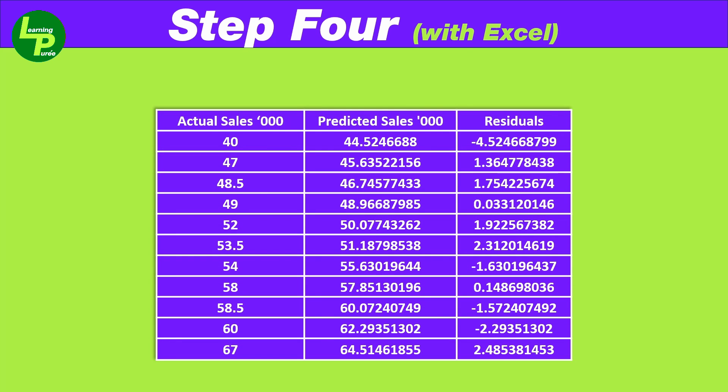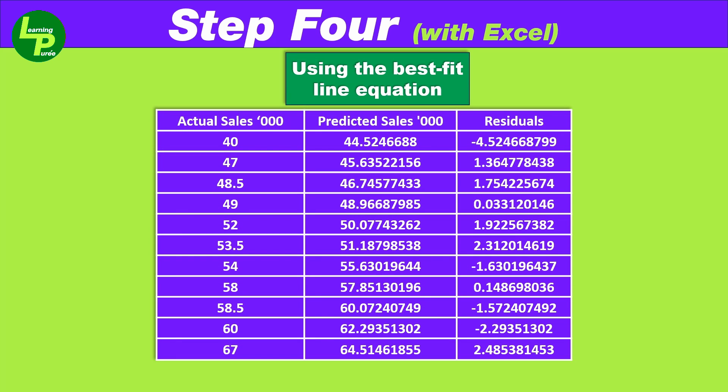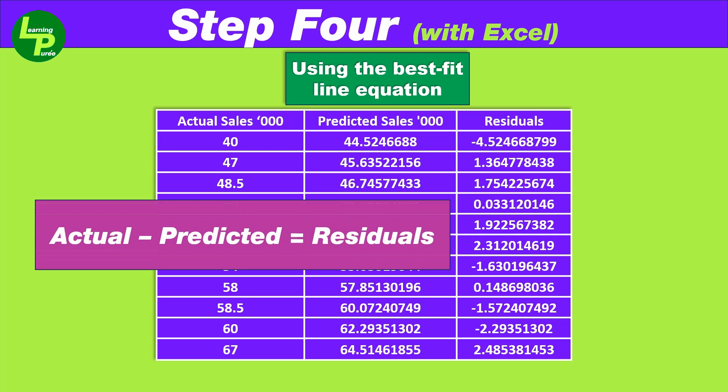Second, using this equation, the calculated predicted value is like so. Third, the difference between the actual value in our data and the predicted value yields us the variation between the best fit regressed line and the actual value. Obviously, we call this difference the residual.